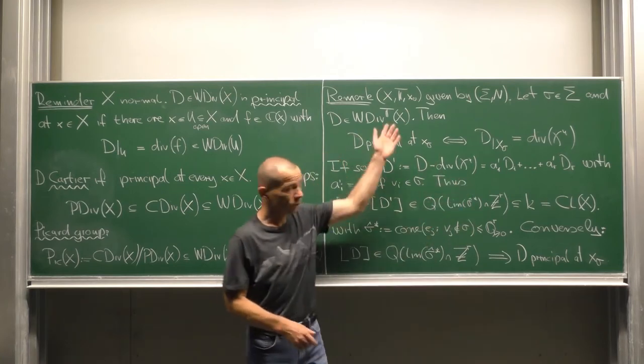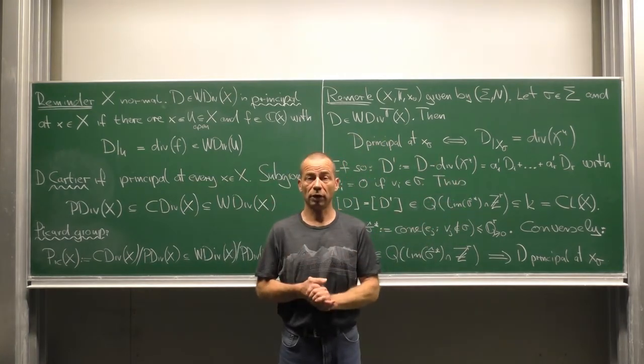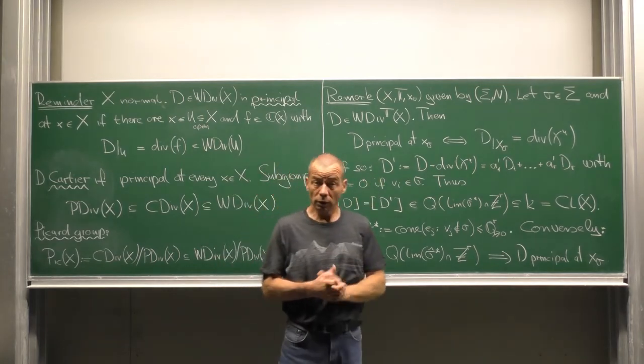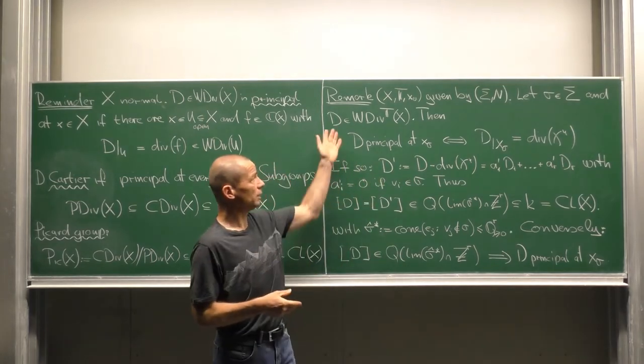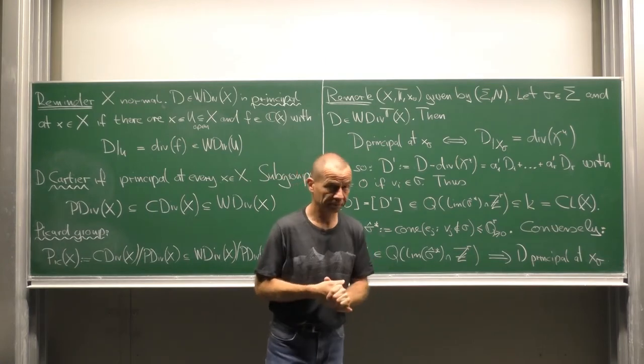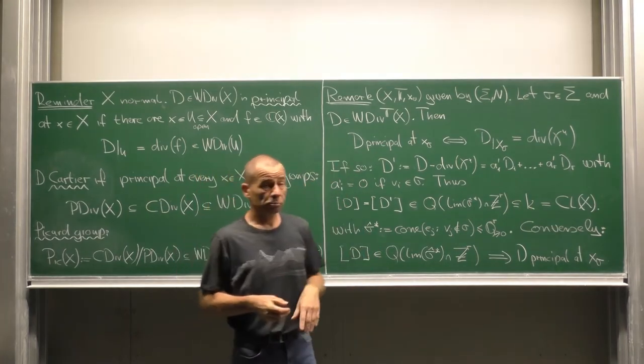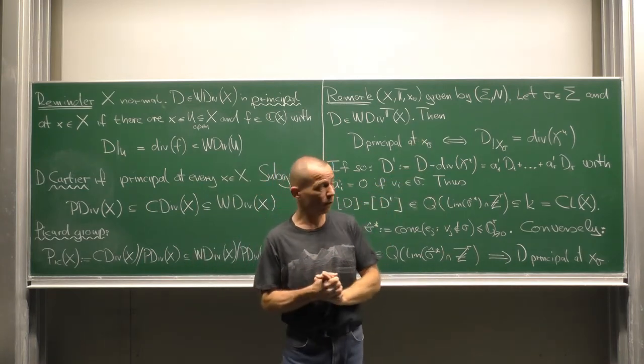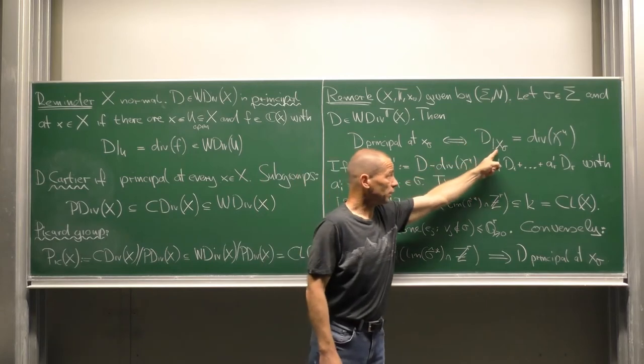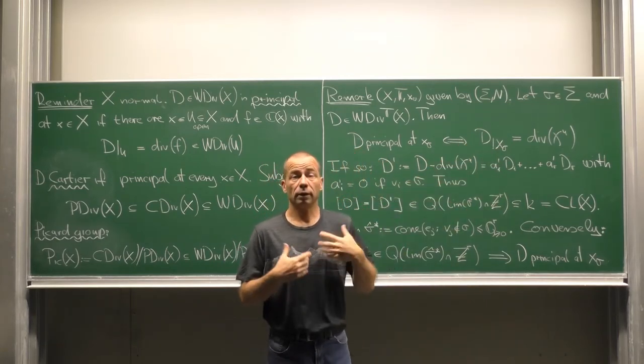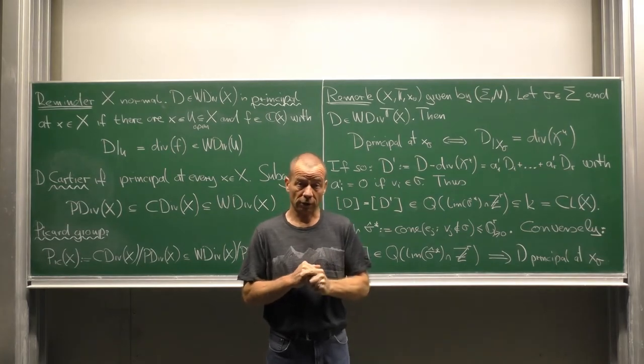Look at a toric variety defined by a lattice fan. Take a cone small sigma and let D be an invariant while divisor on X. Then D is principal at a limit point x sigma if and only if on the open subset capital X sigma our divisor D is the divisor of a character function.